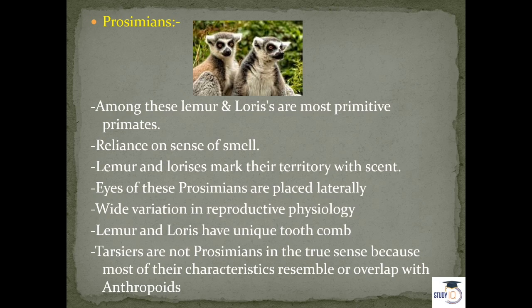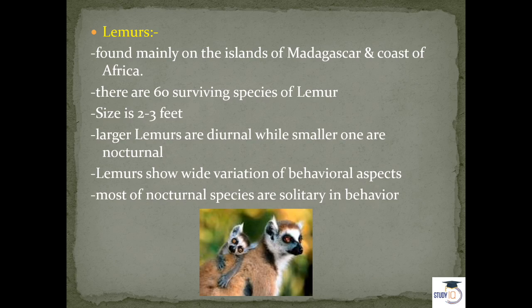Lemurs and lorises have a unique tooth comb, which helps classify them as specialized species. Tarsiers, however, are not prosimians in the true sense because most of their characters resemble Anthropoids. While lemurs and lorises are considered under prosimians, tarsiers more closely resemble the other subgroup, Anthropoidea.